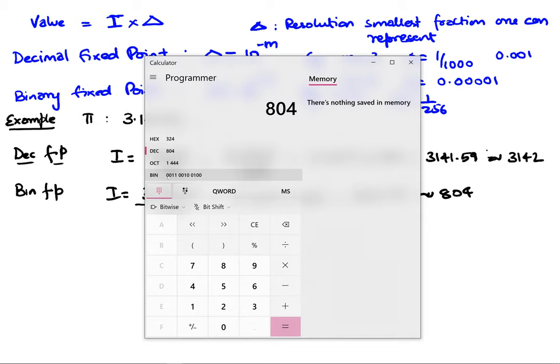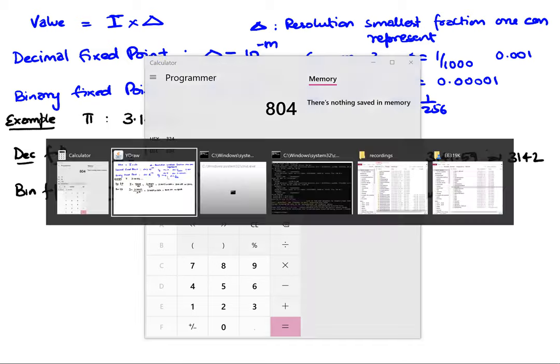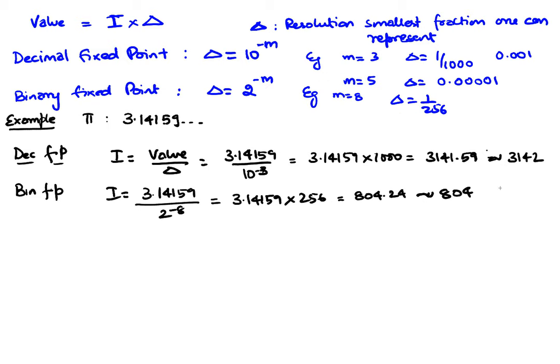Which means internally in binary it's going to be represented as 324. I'm writing it in hex as 0x324, or in binary that's 0011 0010 0100. So that's what it would be internally represented as.